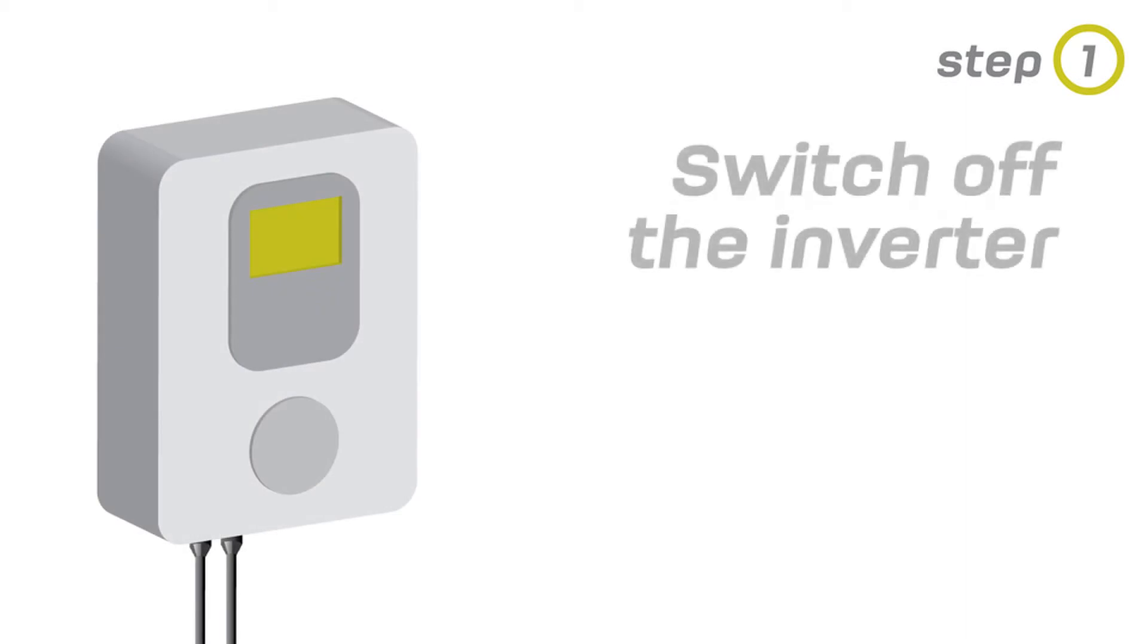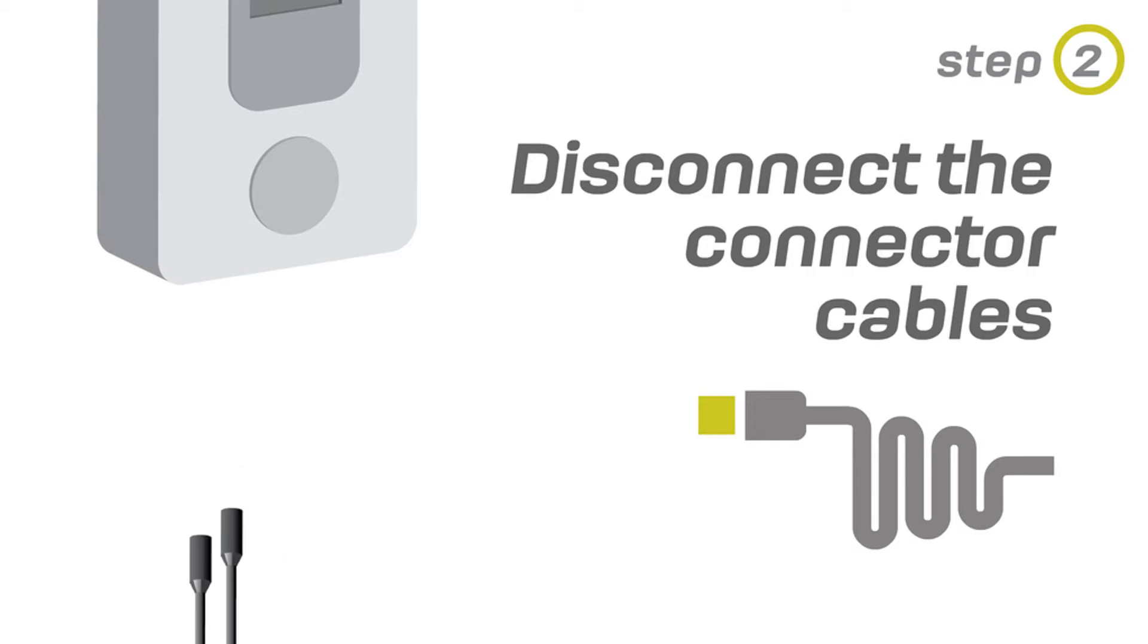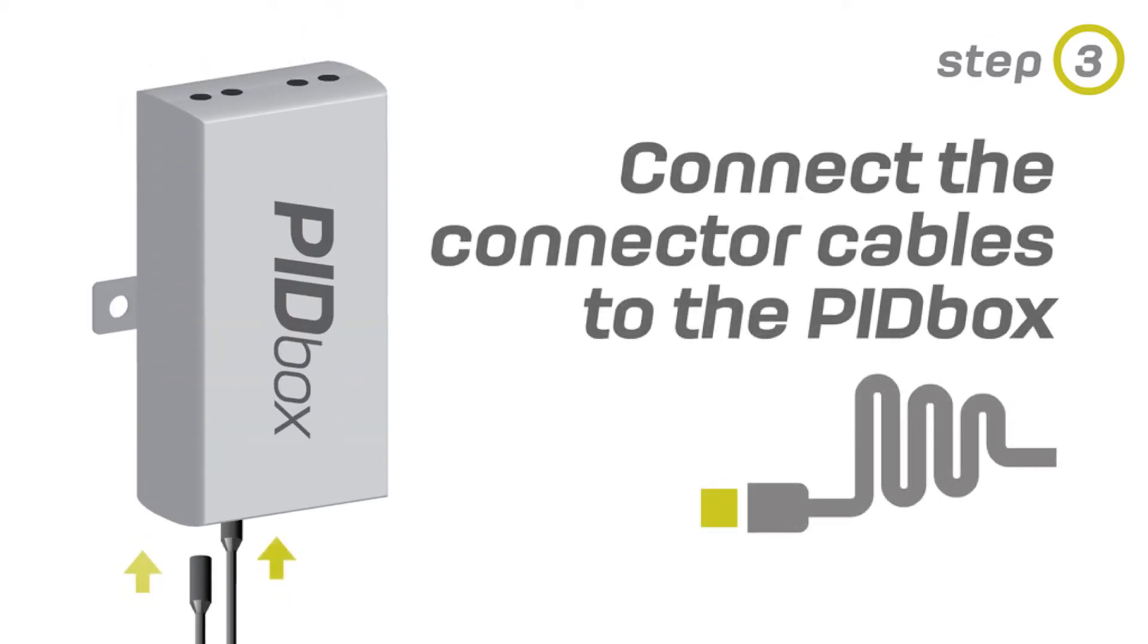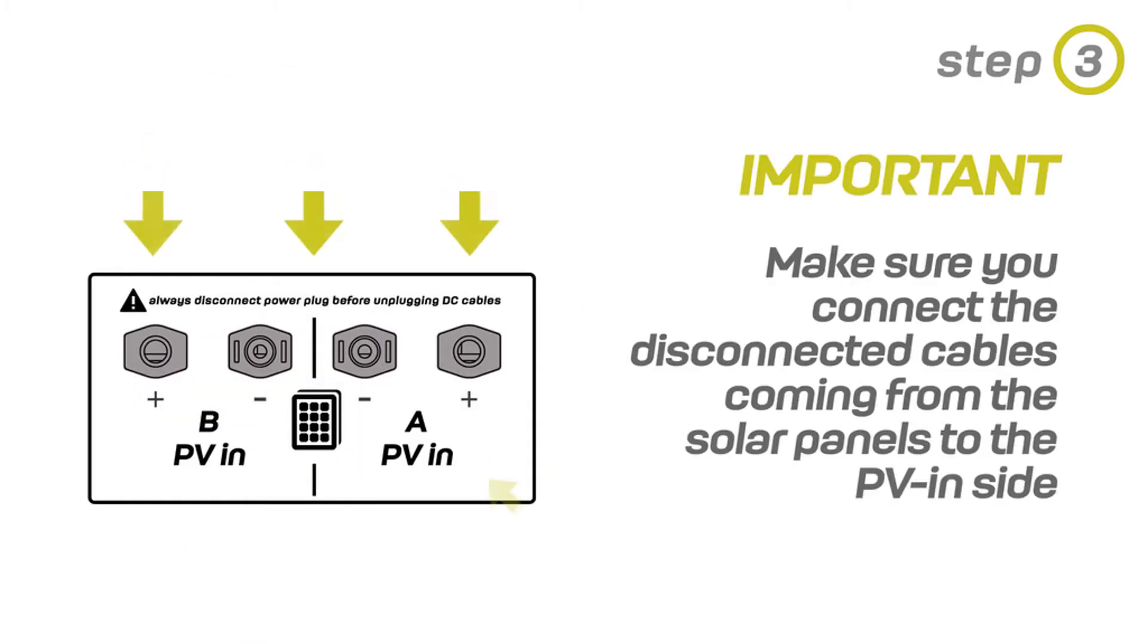Switch off the inverter. Disconnect the connectors from the inverter. Connect the connectors to the PID Box Mini. Make sure you connect the disconnected cables coming from the solar panels to the PV inside of the PID Box Mini.